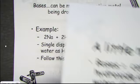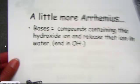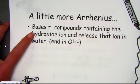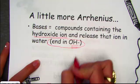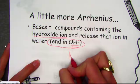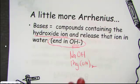Continuing with the Arrhenius theory, let's define a base. Bases are those compounds that contain the hydroxide ion when released in water. Making it easy: it ends with OH⁻, hydroxide. Those compounds that have an OH as part of their formula — such as sodium hydroxide or magnesium hydroxide — are Arrhenius bases. Acids start with H; bases end with OH.